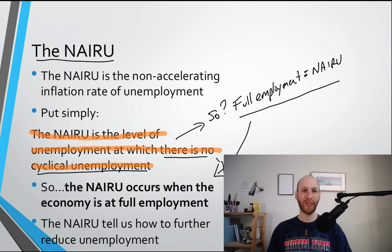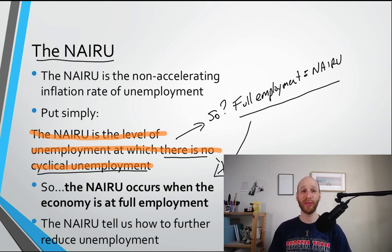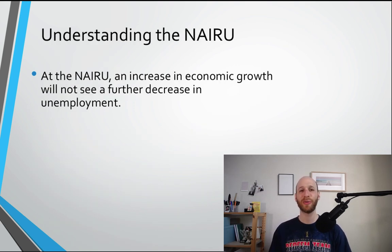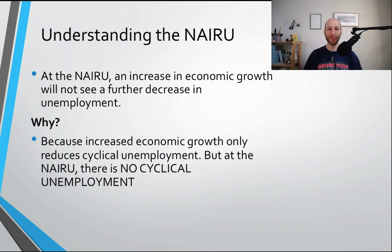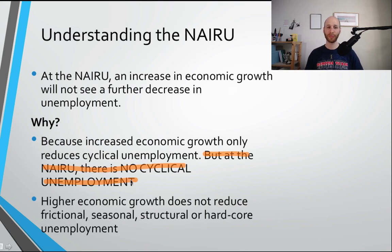The NAIRU tells us, as economists, how to further reduce unemployment depending on whether we are at that level or a little bit higher. At the NAIRU, an increase in economic growth will not see a further decrease in unemployment. If we are at the NAIRU and we try to speed up the economy to reduce unemployment further, we're not going to see a reduction. This is because increased economic growth only reduces cyclical unemployment, but at the NAIRU there is no cyclical unemployment. So higher economic growth — speeding up the economy through, say, expansionary macro policy — is not going to reduce frictional, seasonal, structural, or hardcore unemployment.